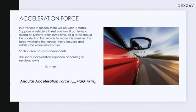ηg is the efficiency of the gear system, which is usually between 85% to 90%. In order to find the angular acceleration force, we need to know the moment of inertia of the vehicle. But in some scenarios it might be difficult to find the moment of inertia, so in that case we take the angular acceleration as 5% of the linear acceleration. The derivation for the equation of angular acceleration force is discussed in another lecture.